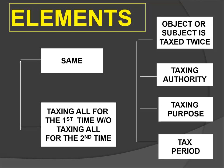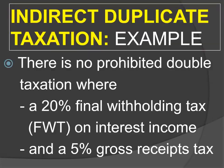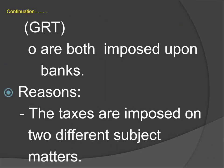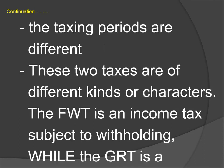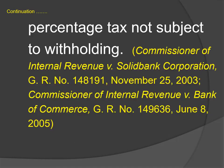We have the elements of direct duplicate taxation: the element of sameness, and the element of taxing all for the first time without taxing all for the second time. If one of these elements is missing, then there is indirect duplicate taxation which does not violate the Constitution. An example: it was held that there is no prohibited double taxation where a 20% final withholding tax on interest income and a 5% gross receipts tax are both imposed on banks. Why? The taxes are imposed on two different subject matters, the taxing periods are different, and these two taxes are of different kinds. The final withholding tax is an income tax subject to withholding, while the gross receipts tax is a percentage tax not subject to withholding.